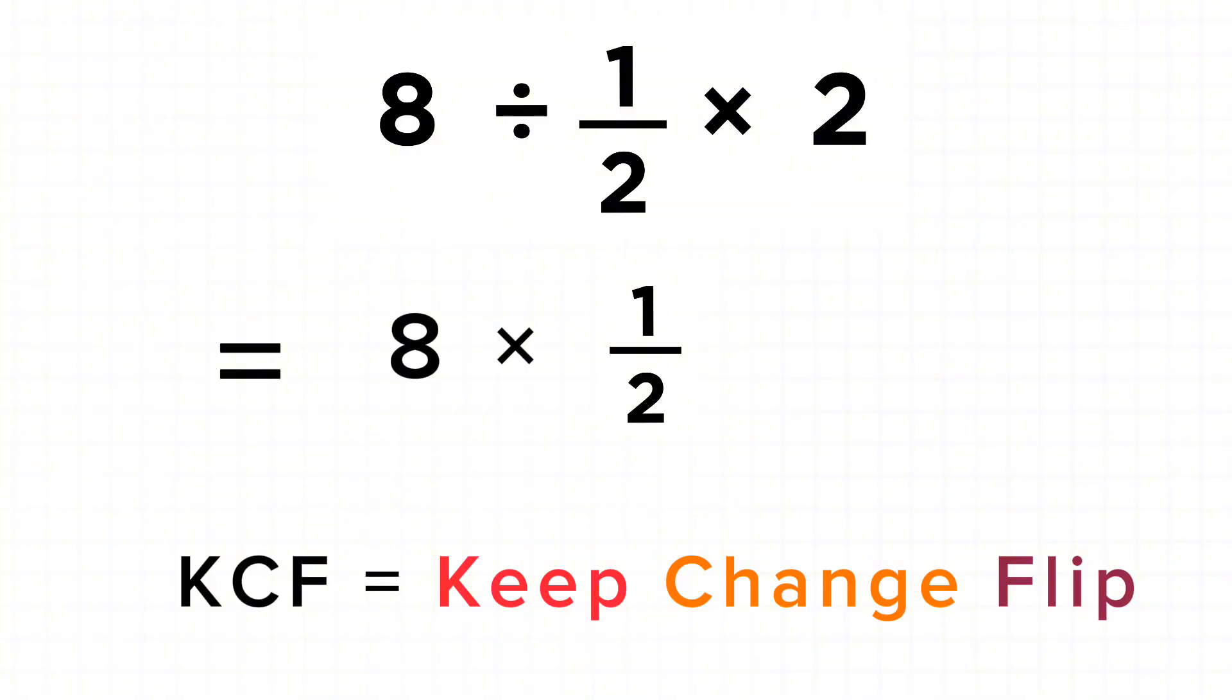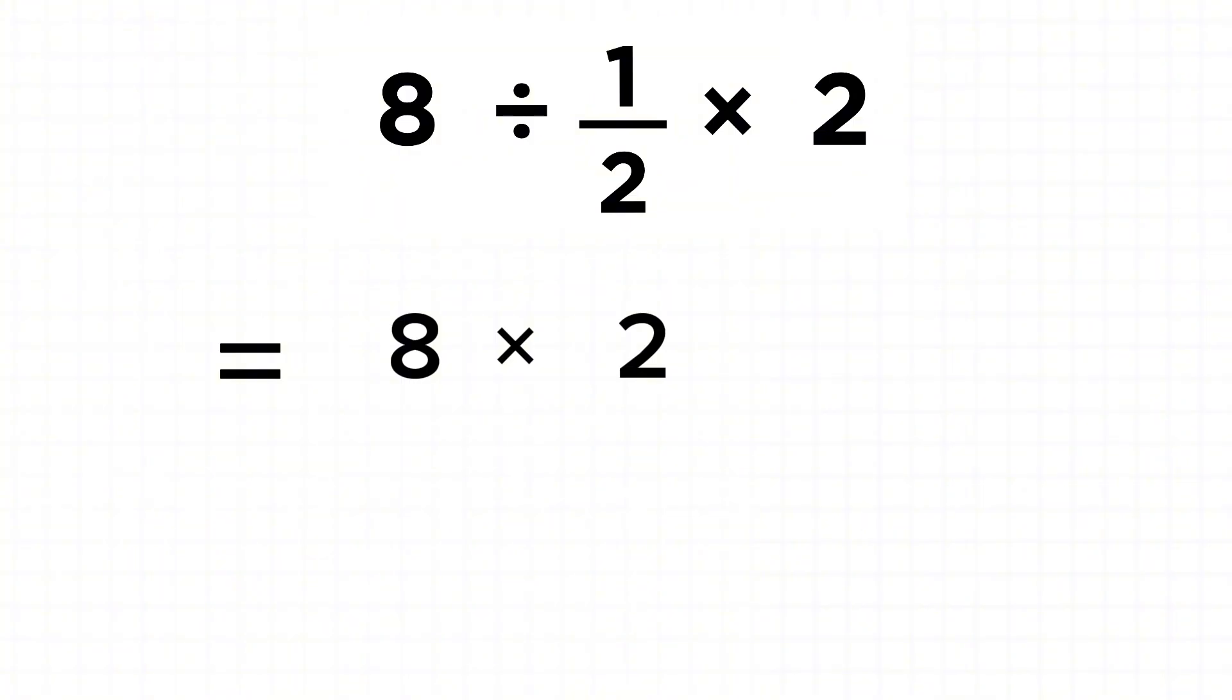and flip 1/2 to get 2. We've taken the reciprocal of 1/2. Now we have 8 times 2 which gives 16, and then we multiply by 2, so 16 times 2 gives us 32.